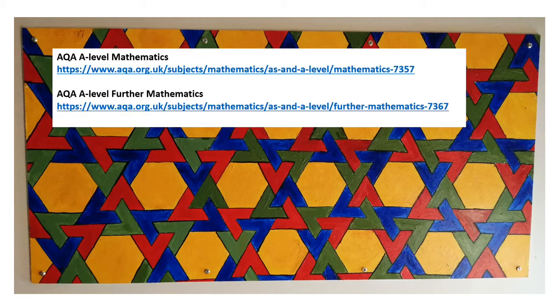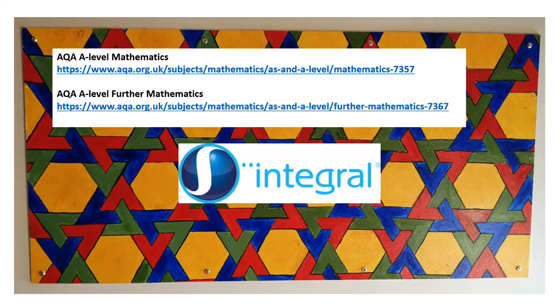In years 12 and 13 students follow the AQA specification and are expected to study Pure Maths, Mechanics and Statistics. Further Maths students also study aspects of discrete mathematics. Exams are taken in the May-June period each year. Graphic calculators and textbooks are available to all students for the duration of the course and students also have access to an online package called Integral to support their own independent learning.